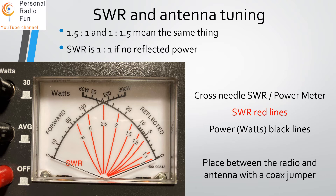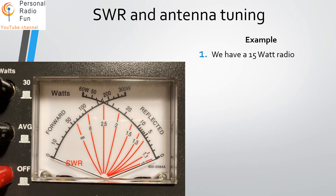On the left side of the meter there's an arc that says 'forward,' and on the right side it says 'reflected.' When using a separate meter, you'll need a small coax jumper to go from the radio to the meter. The back of the meter indicates transmitter and antenna ports for connecting the antenna. Some radios actually have these meters built in.